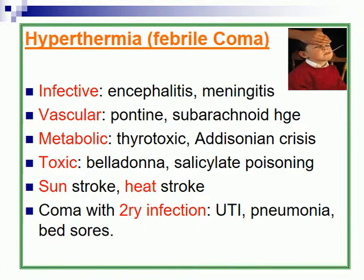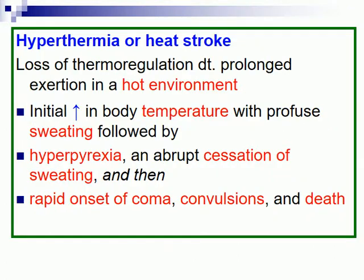Hyperthermia or febrile coma may occur in cases of infections, some vascular problems such as subarachnoid haemorrhage, metabolic reasons, toxins, sunstroke, heat stroke, coma with secondary infections, or heat stroke due to loss of thermoregulation from prolonged exertion in a hot environment.